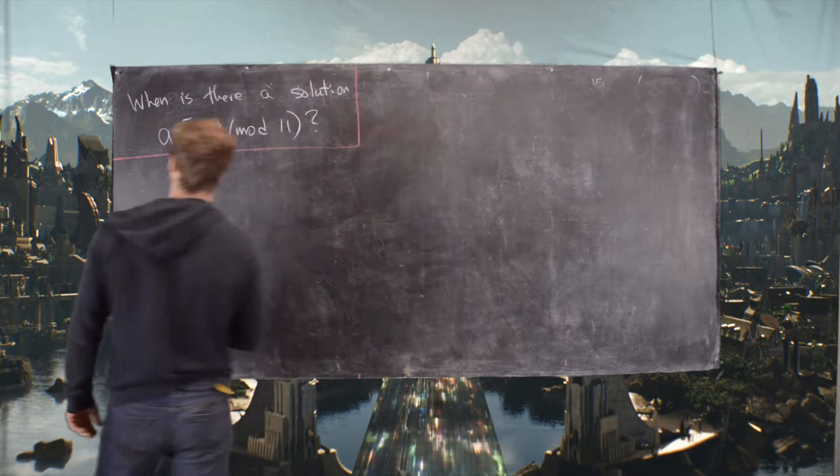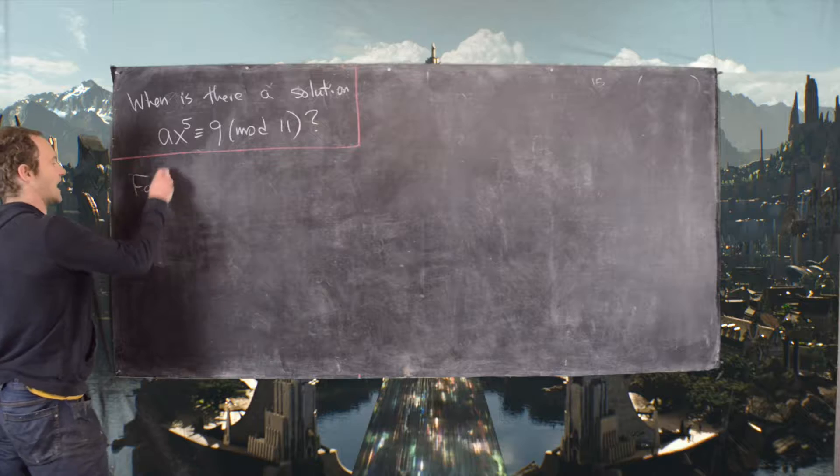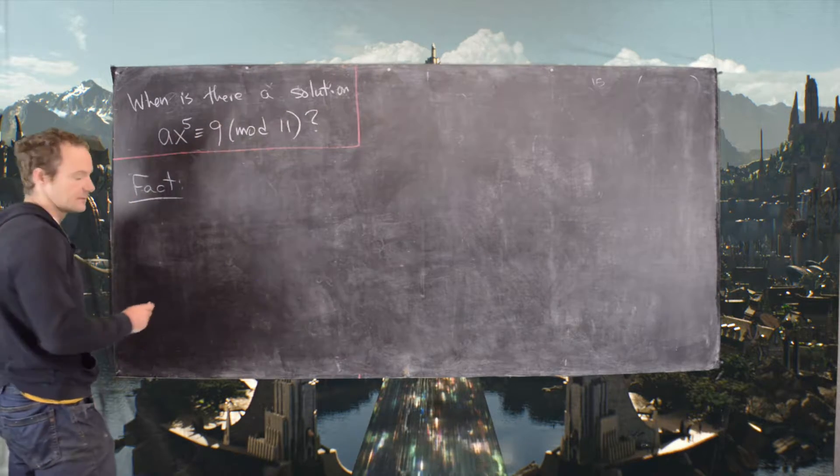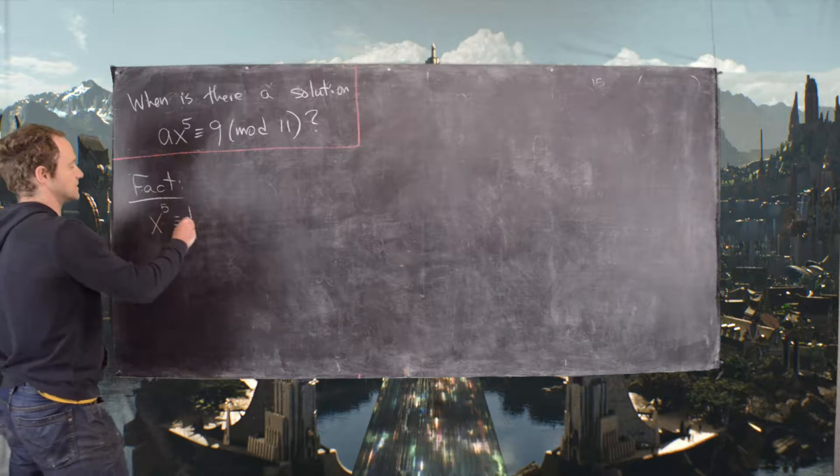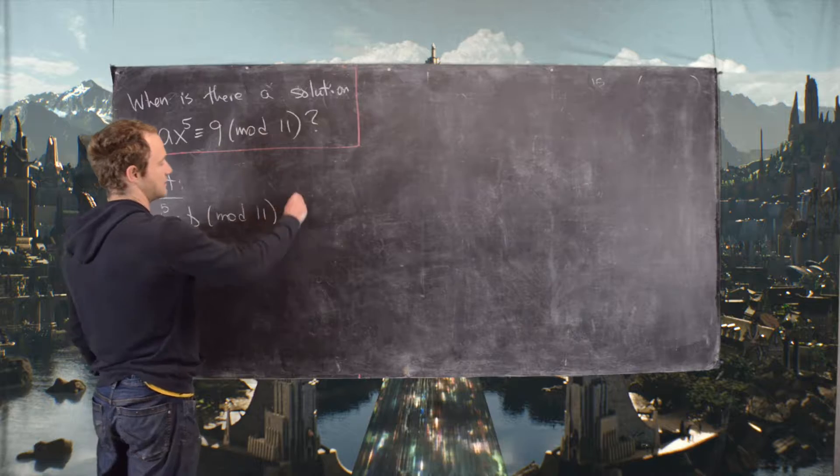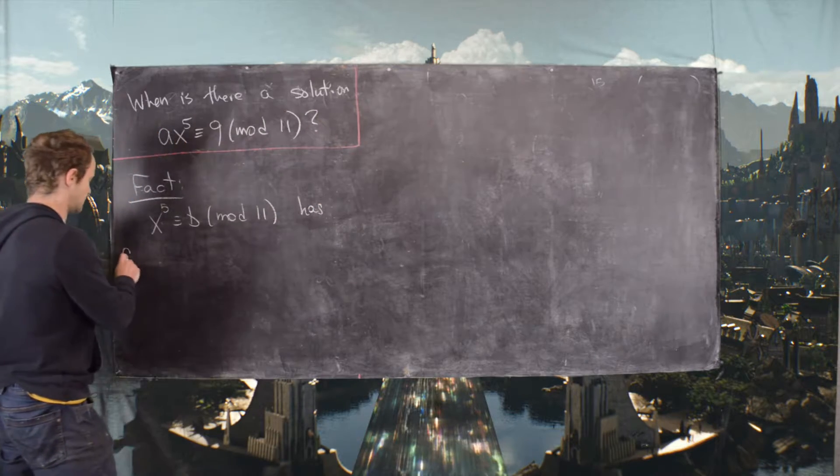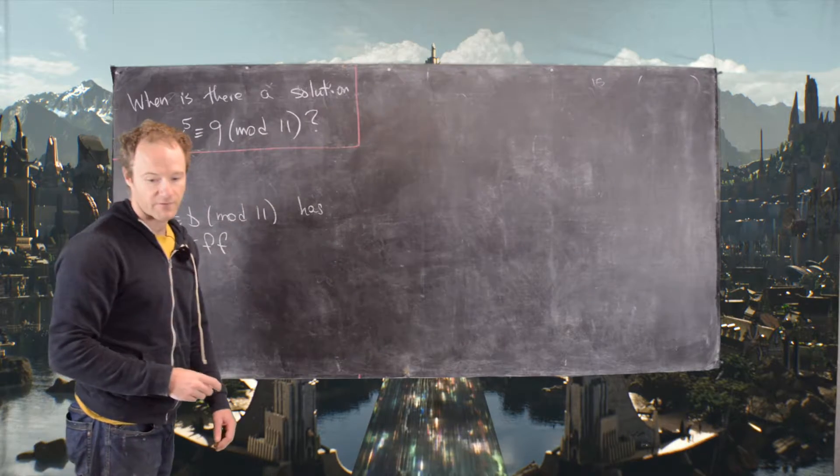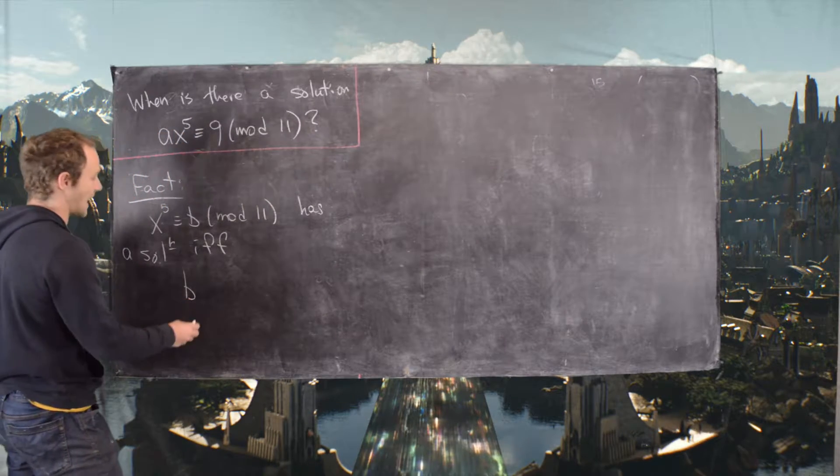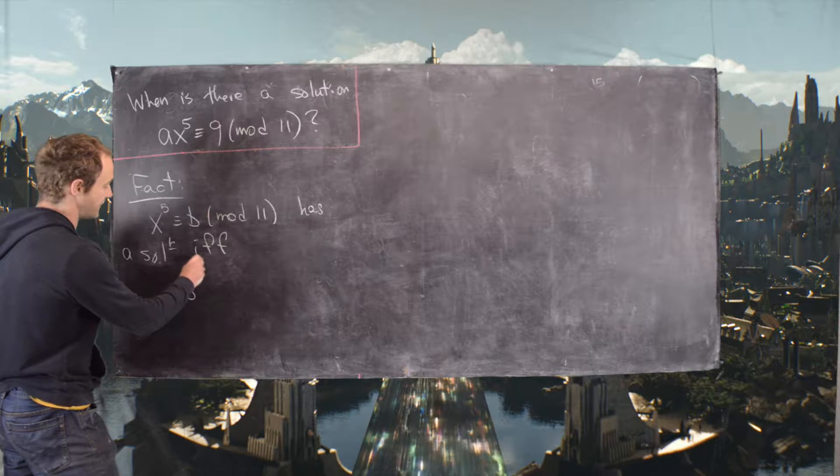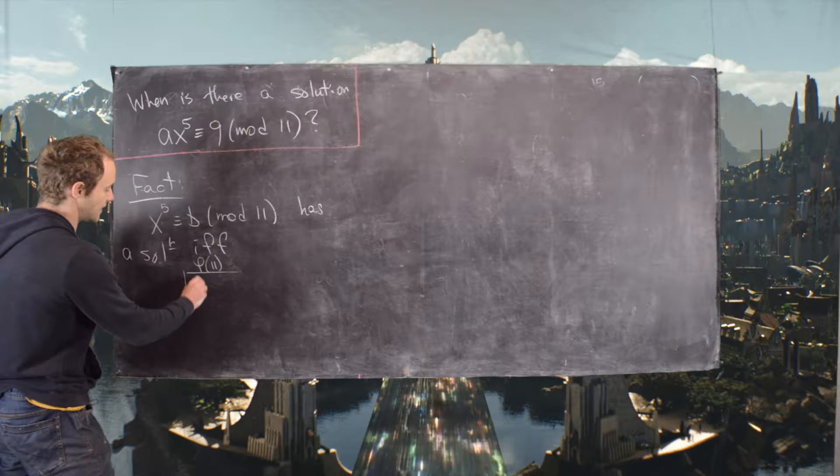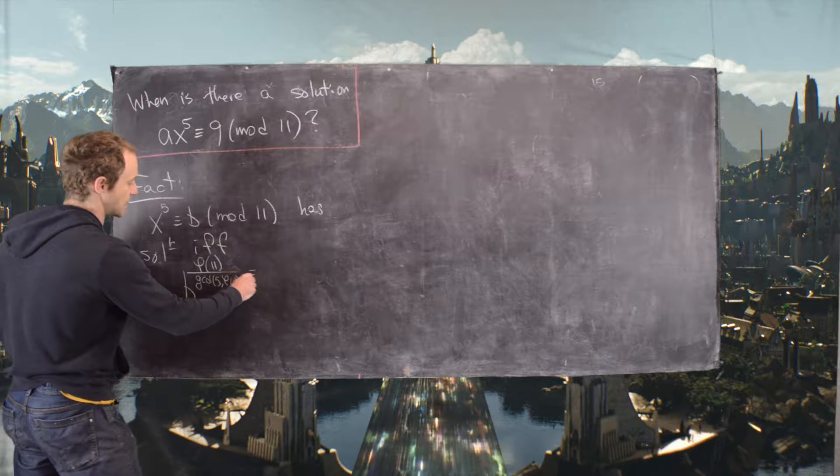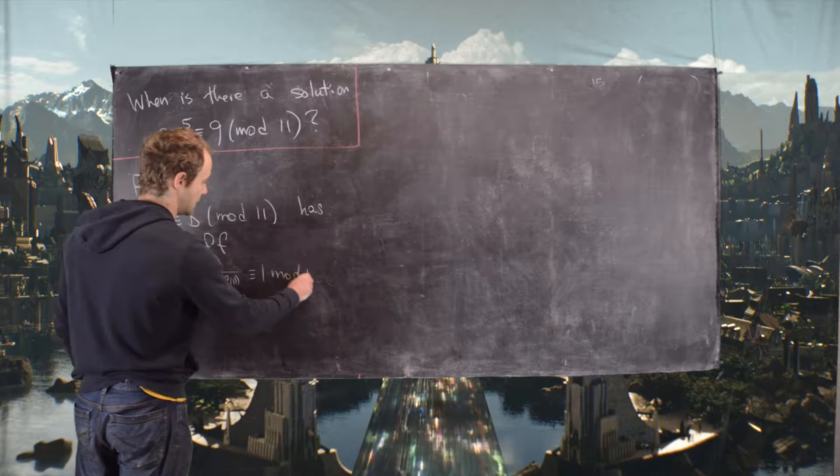We're going to use a fact that I've proven in a previous video. Written in terms of the appropriate numbers here, x^5 ≡ B (mod 11) has a solution if and only if B^(φ(11)/gcd(5,φ(11))) ≡ 1 (mod 11).